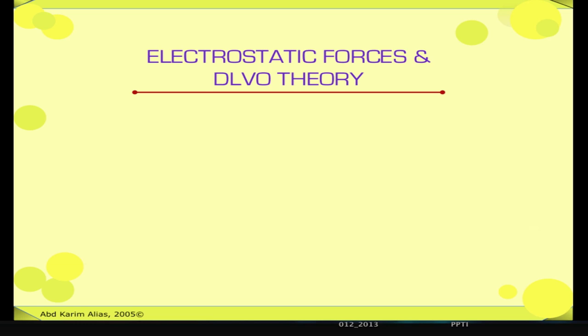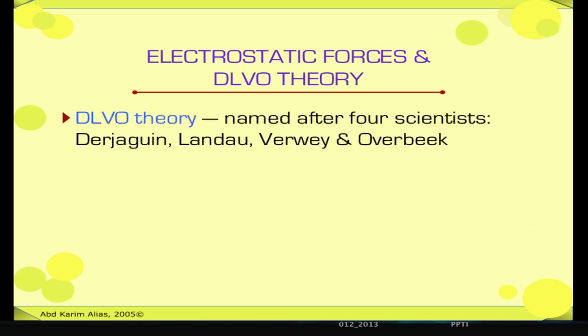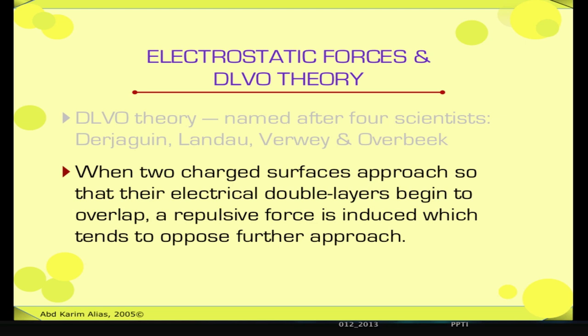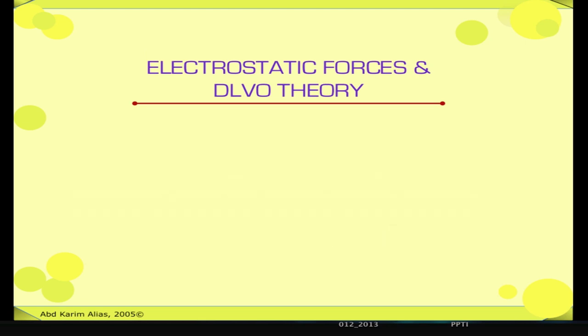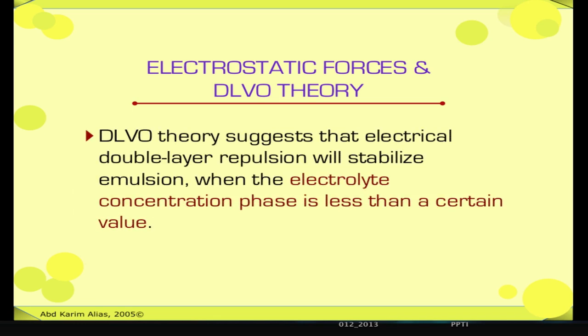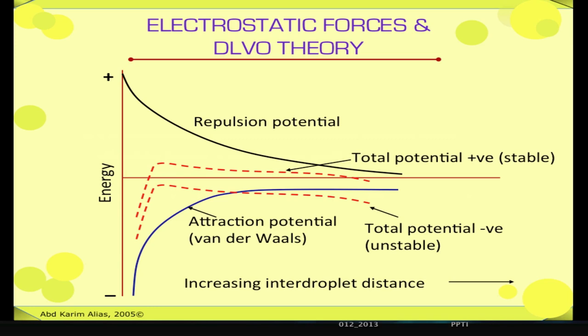Let me introduce the DLVO theory in relation to the role of electrostatic forces in emulsion stability. The theory was named after four scientists: Derjaguin, Landau, Verwey, and Overbeek. In this theory, the magnitude of the stabilizing energy barrier was calculated from the sum of the electrostatic double layer repulsion and the van der Waals attraction. DLVO theory suggests that electrical double layer repulsion will stabilize emulsion when the electrolyte concentration is less than a certain value. These additive forces may be expressed as a potential energy versus separation curve. A positive resultant corresponds to an energy barrier and repulsion, while a negative resultant corresponds to attraction and hence aggregation.